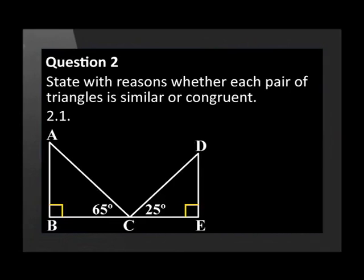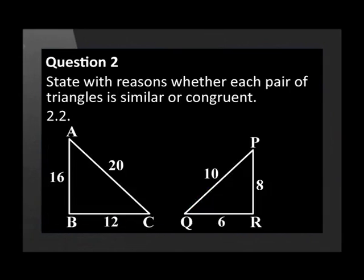Let's look at the next question. State with reasons whether each pair of triangles is similar or congruent. The first two triangles are ABC and DEC. The second two triangles are ABC and PRQ.